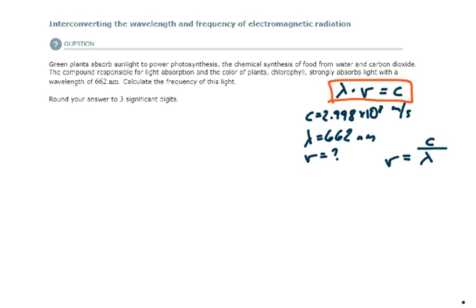I need the units to cancel out. The units for the speed of light are meters per second. The units for the given wavelength are nanometers. So I need to convert this from nanometers to meters.